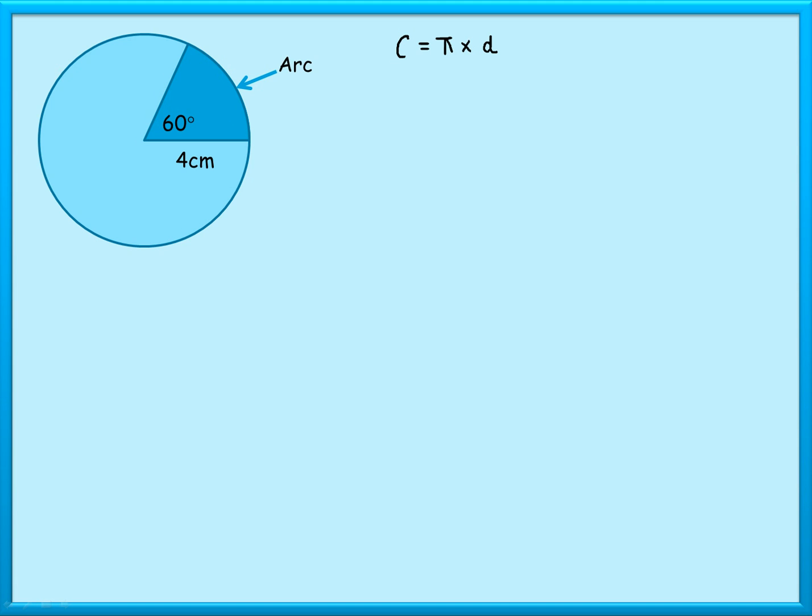So let's say that the radius there was 4 and the angle there was 60°. Well, for the entire circle, I would do circumference is π times, and don't forget if this is the radius,